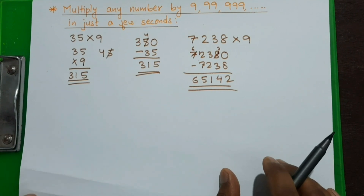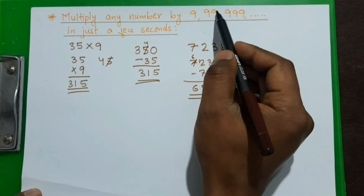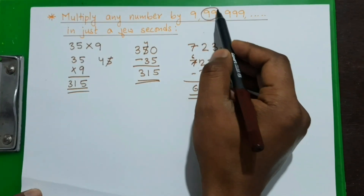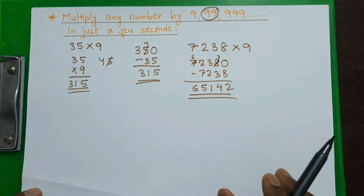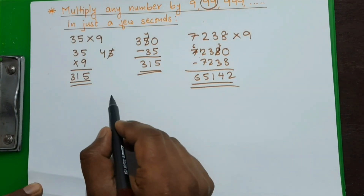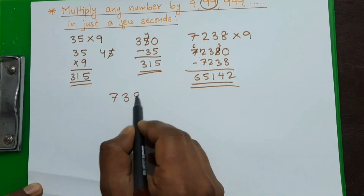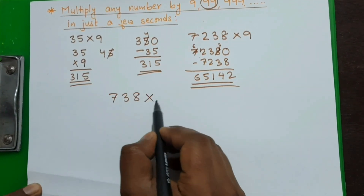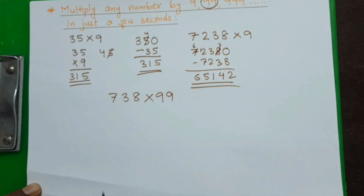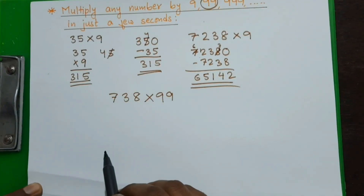This method is even more beneficial when we are multiplying any number by 99. Let's multiply 738 by 99.